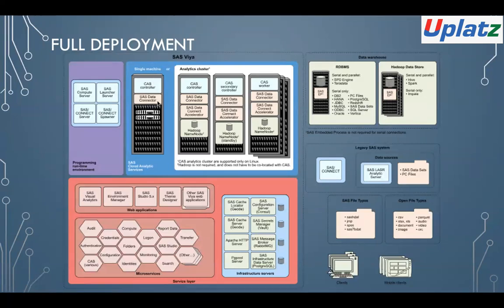A single machine will contain one cache controller, SAS connect data connectors, and the required software. In an analytical cluster you will have multiple cache controllers — controller one, second controller, workers, etc. — with components associated with each cache controller. This acts as a load balancer and enables high availability. SAS analytical clusters are mainly supported only on Linux environments.